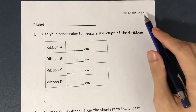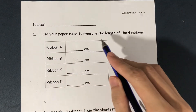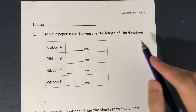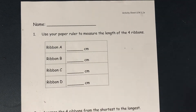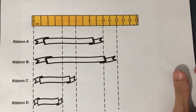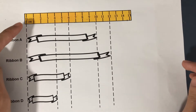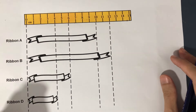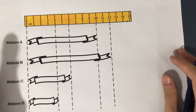Now that you have seen how rulers look like, let's start measuring using these rulers. In Activity Sheet 5.2A, we are going to use your paper ruler to measure the length of four ribbons: Ribbon A, B, C, and D. Here they are. Let's begin, starting with Ribbon A.